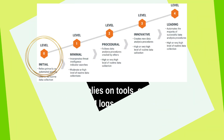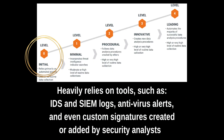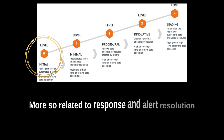The initial level of the hunting maturity model is level zero. This is where the organization will heavily rely on tools, including an IDS (intrusion detection system), SIEM logs, and antivirus alerts. It could also include signatures and indicators created by the analysts, who will then put them into the monitoring systems. At this level, there isn't a lot of hunting going on — it's more related to response and alert resolution.